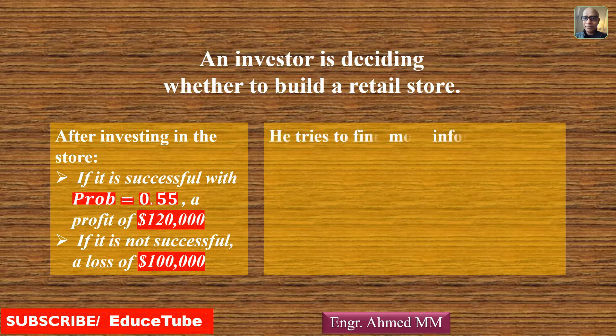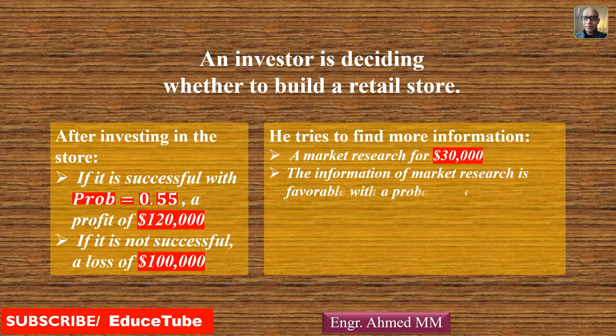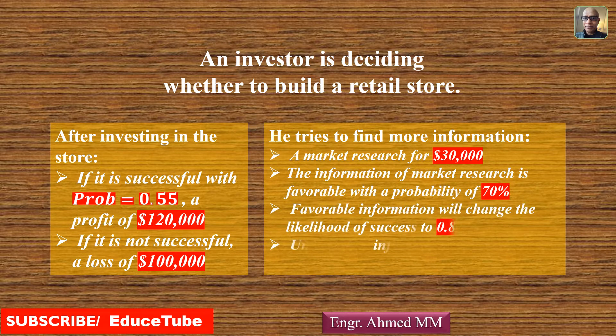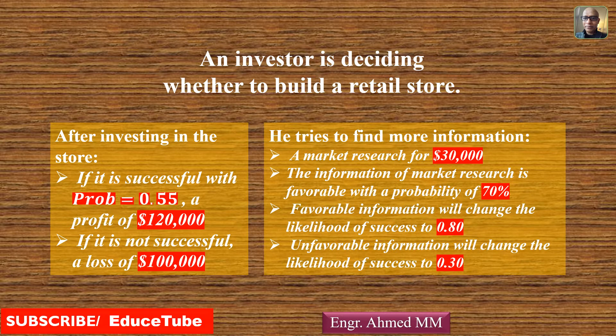That is why he is trying to find more information. It is like a market research, and it was found that it will cost 30,000. The market research information is favorable with a probability of 70%. Favorable information will change the likelihood of success to 0.8, but unfavorable information will change the likelihood of success to 0.3.